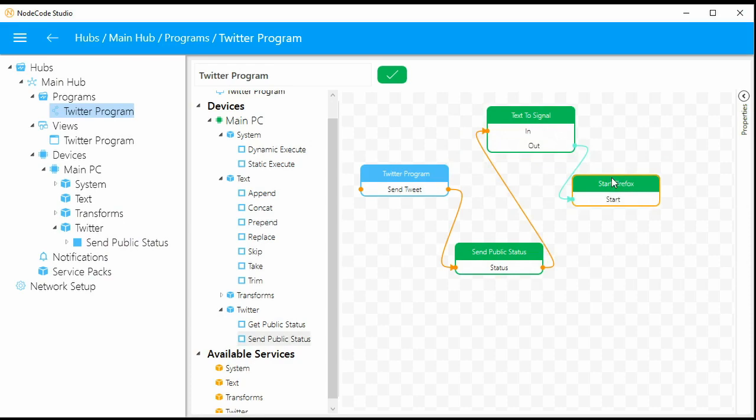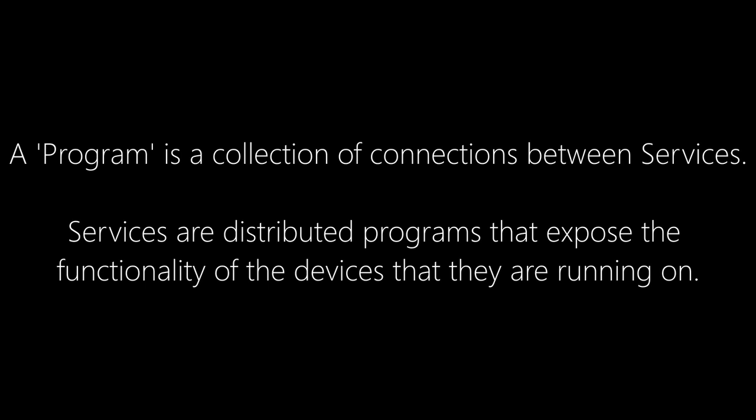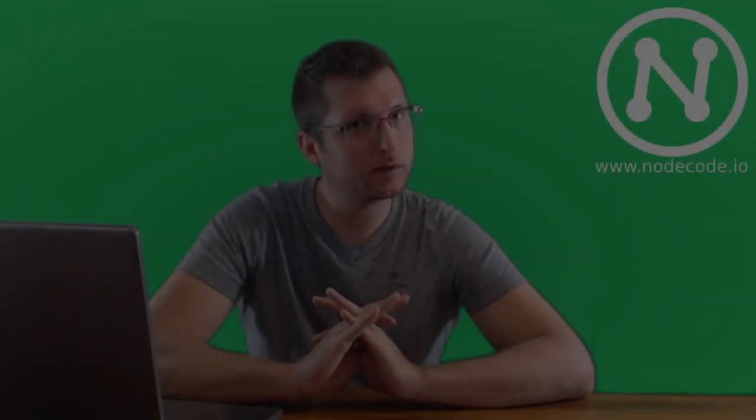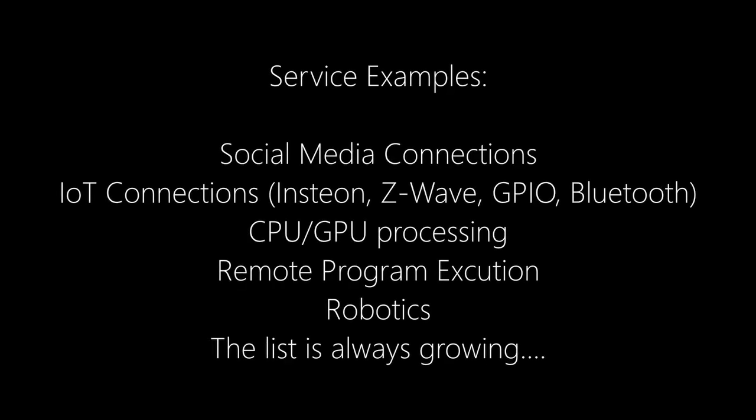Now what is this whole program thing about? Well, a program is basically just a collection of connections. Node-RED can run on devices all around the world and you want to be able to connect these devices. There are a lot of different devices with different capabilities — some have cameras, speakers, GPIO inputs, AC control, web connectivity. What Node-RED tries to do is break out all these different capabilities into things called services. A service is really just kind of like a plug-in distributed amongst different types of devices.